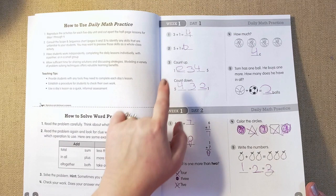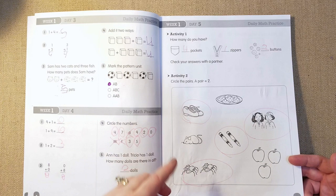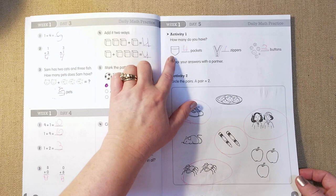So I noticed that on all of the activities, they're two pages long. So week one, day one, two, three, and four. And then the fifth one is always the full entire page. So it's maybe more interactive or has a different activity.